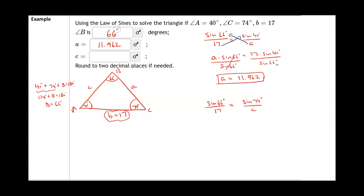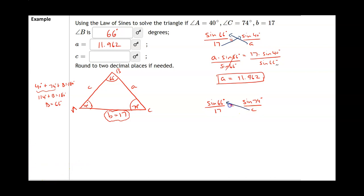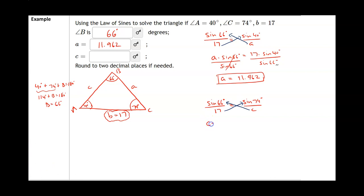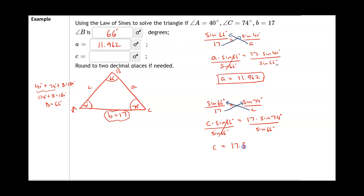The corresponding angle of side c is 74 degrees, so I cross multiply again: c times sine of 66 degrees equals 17 times sine of 74 degrees. Dividing both sides by sine of 66 degrees gives c by itself. Typing 17 times sine of 74 divided by sine of 66 into the calculator gives c ≈ 17.888.